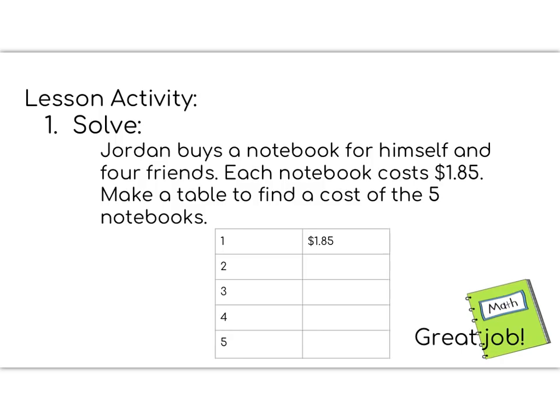All right, 5th graders, time for the lesson activity. It says, Jordan buys a notebook for himself and four friends. Each notebook costs $1.85. Make a table to find the cost of the five notebooks. So if each notebook is $1.85, you'll need to take the line before it and add $1.85.